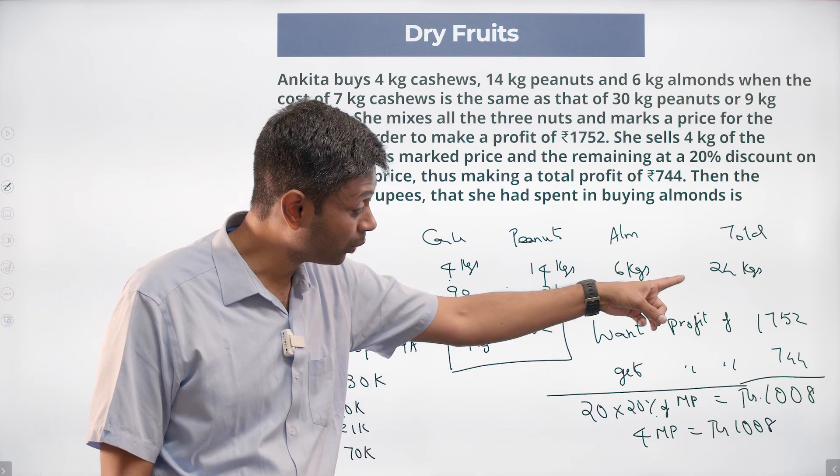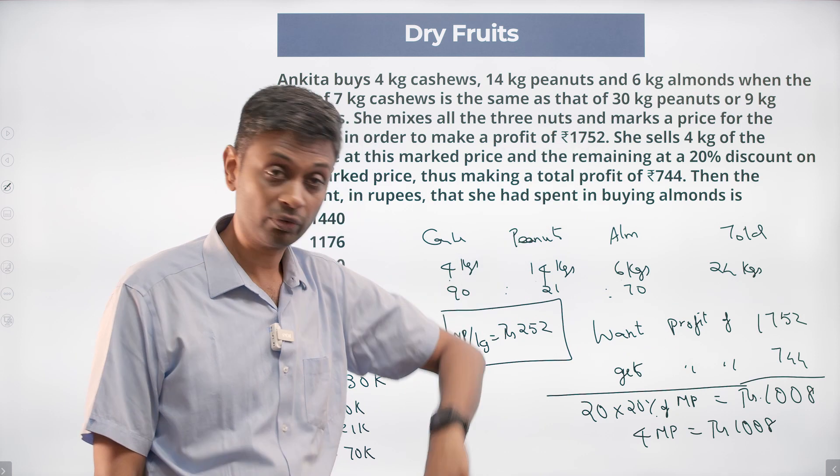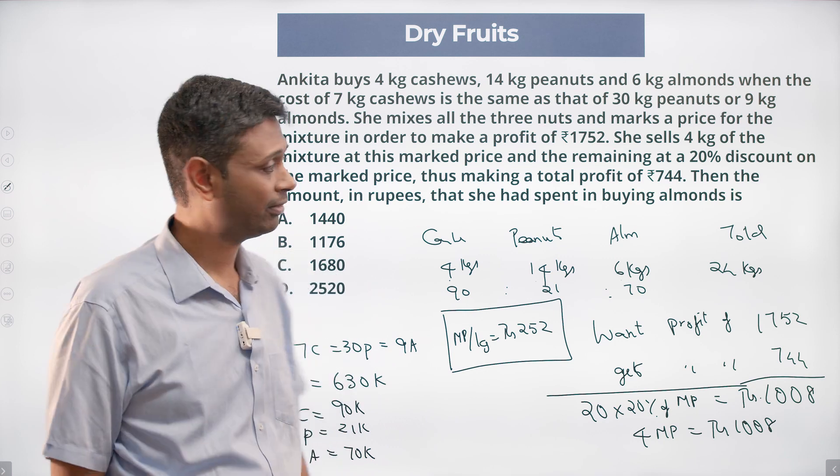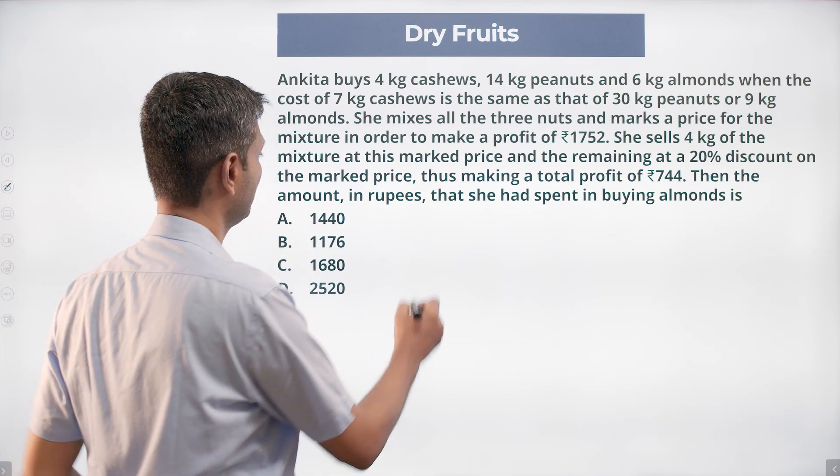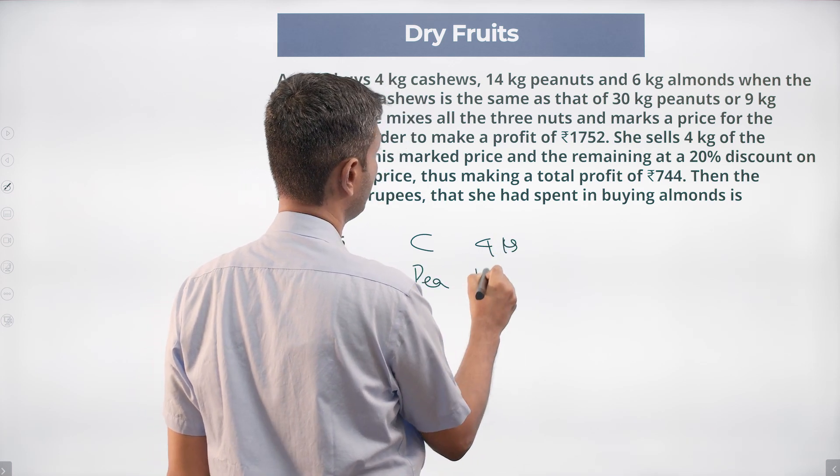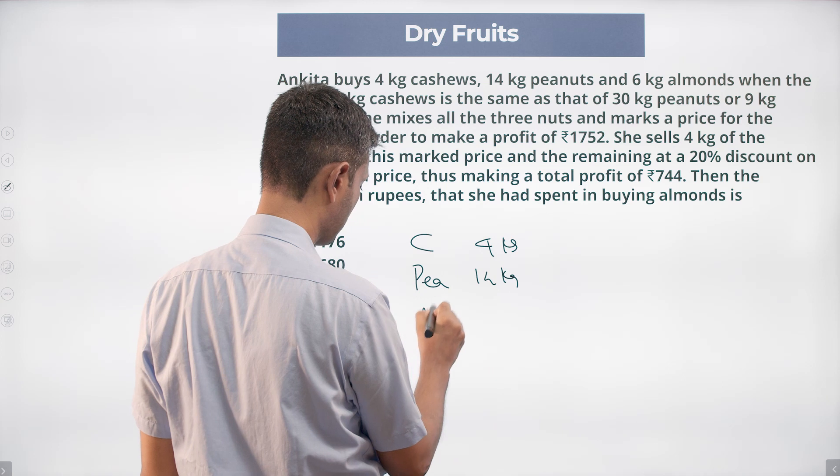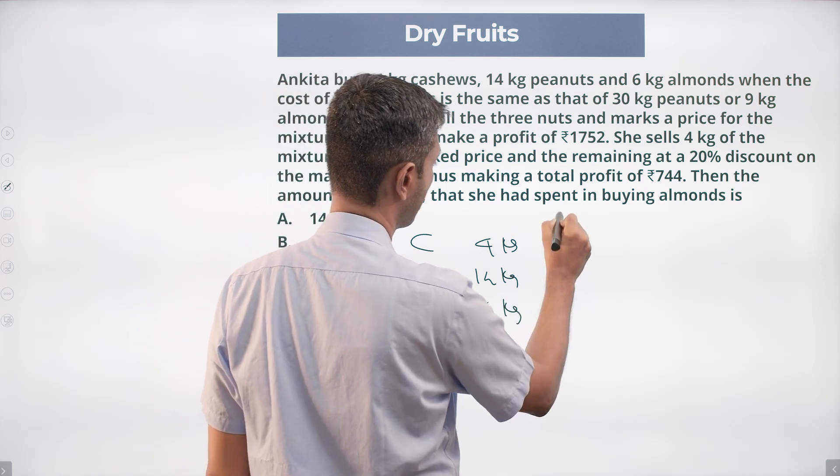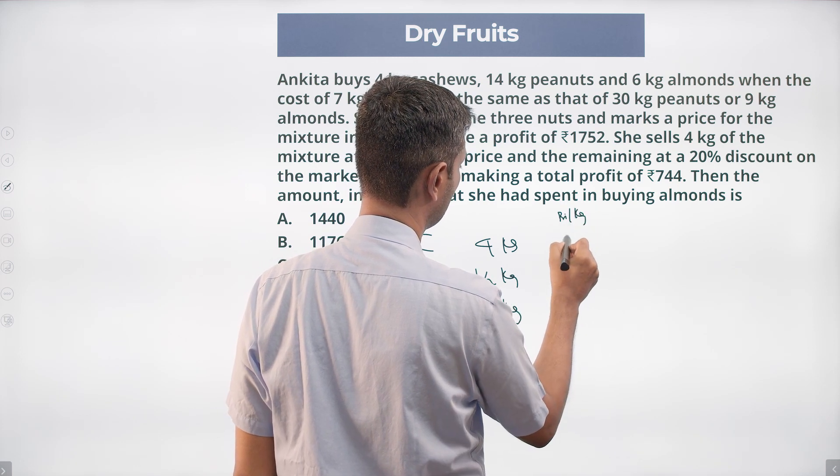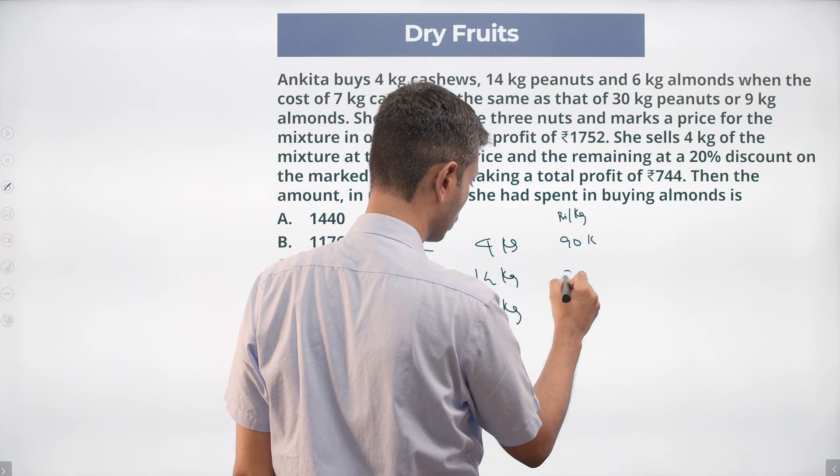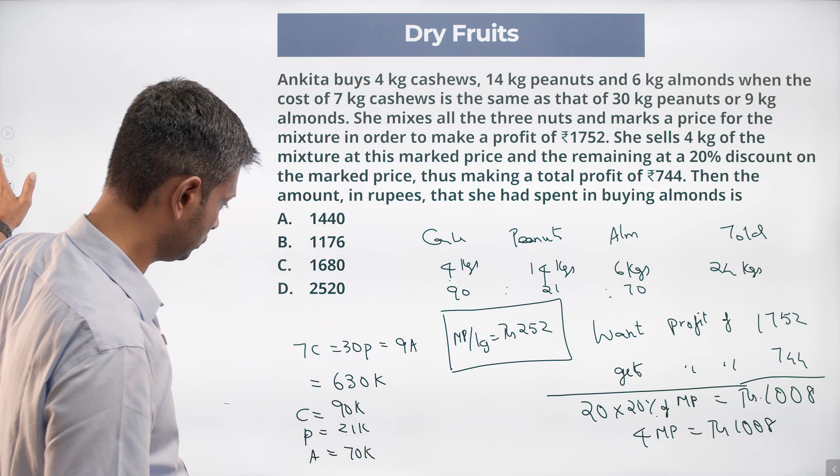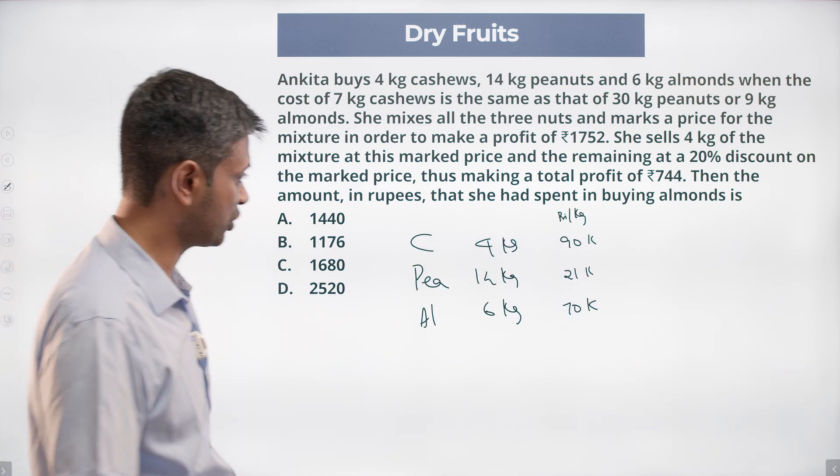Then we'll have to do into 24 kilograms, think about profit going to 1752 and then come back to this. So I'm going to rewrite this question. Cashews four kilograms, peanuts fourteen kilograms, almonds six kilograms. Per kg, on a per kg price, price per kilogram, this is 90K, 21K, 70K.